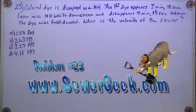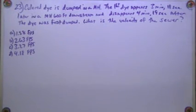Okay, problem number 23, the Wastewater Collection Book at SewerGeek.com. The colored dye is dumped into a manhole. The first dye appears 3 minutes 18 seconds later in a manhole that's 600 feet downstream and disappears 4 minutes 19 seconds after the dye was first dumped. What is the velocity of the sewer?